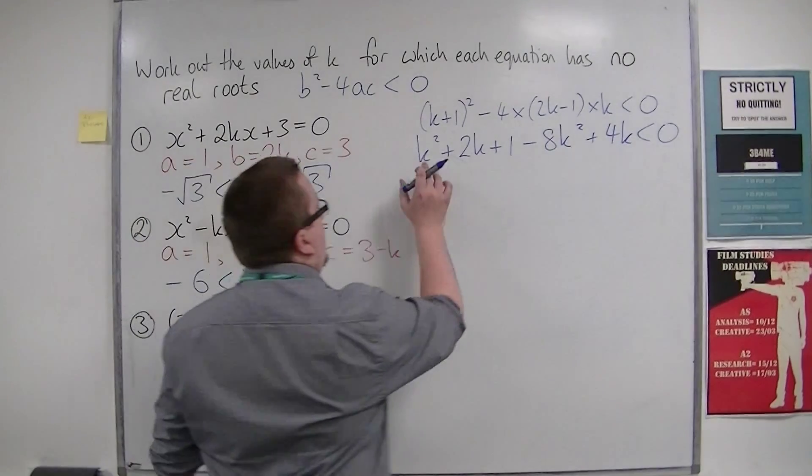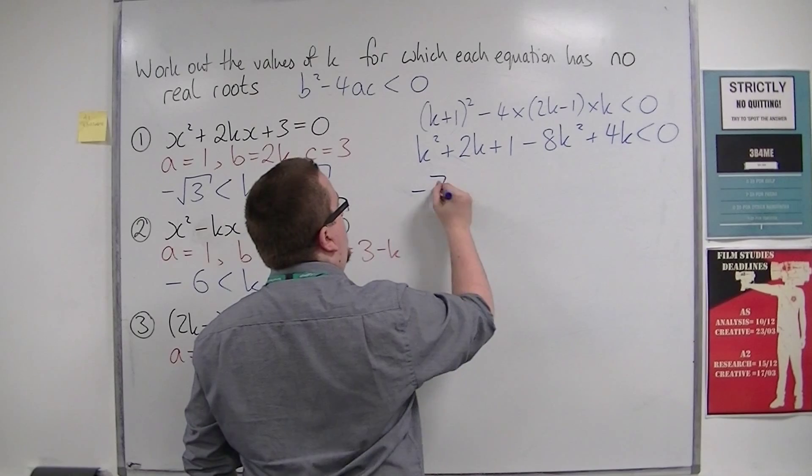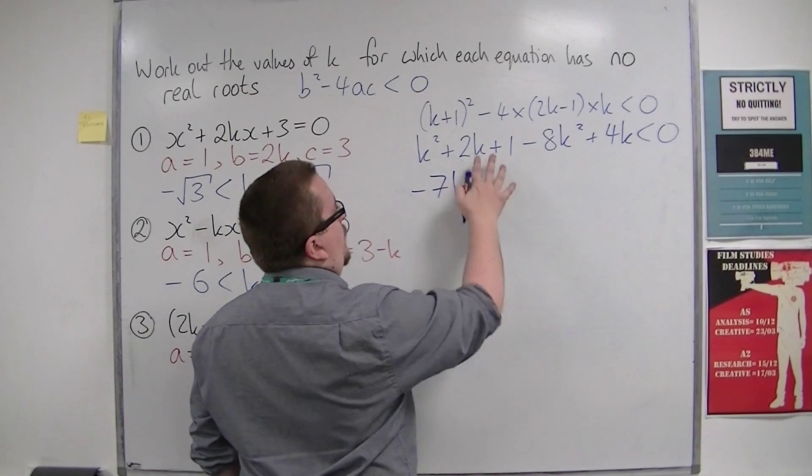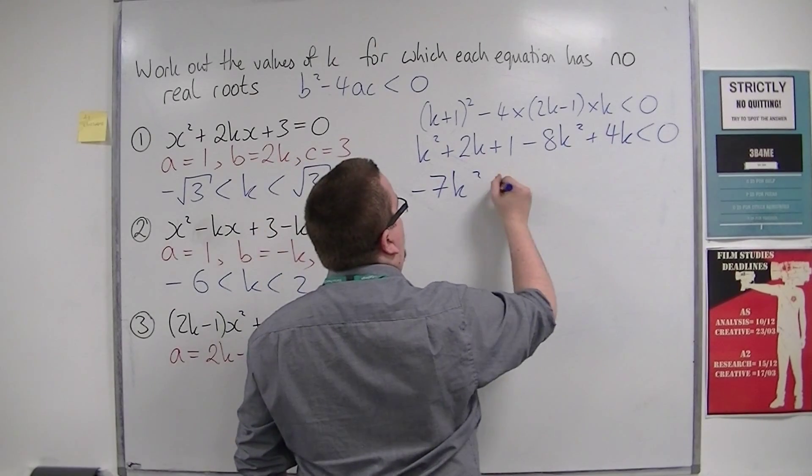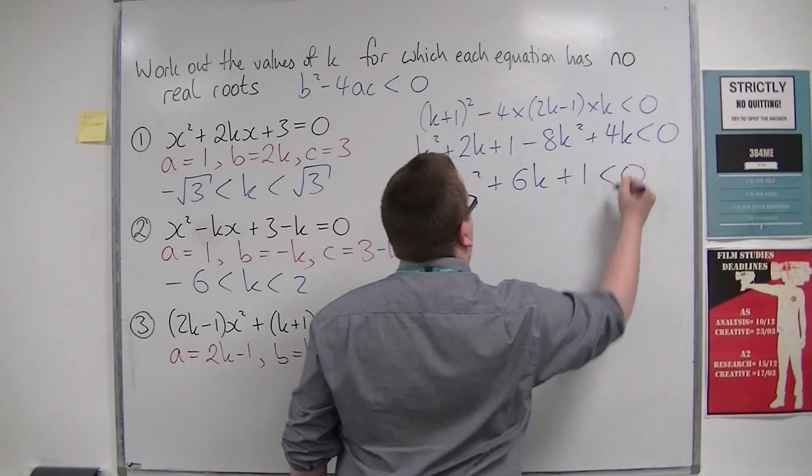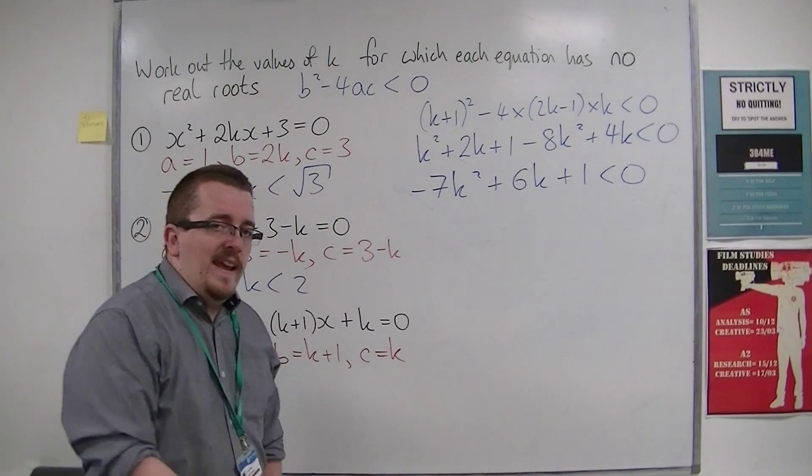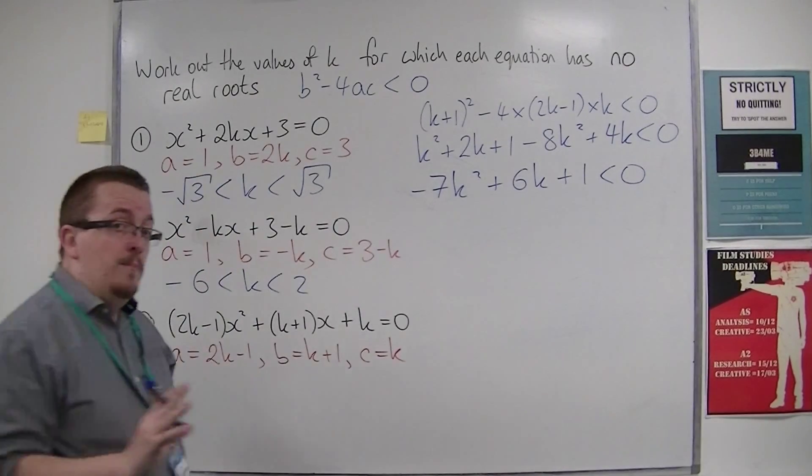We have k² - 8k² = -7k². We've got 2k + 4k, so 6k. And we've got +1.